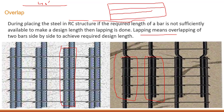This first bar covers 40 feet, and then we use another bar from that position up to the end to achieve the full design length. This is what is called overlap.